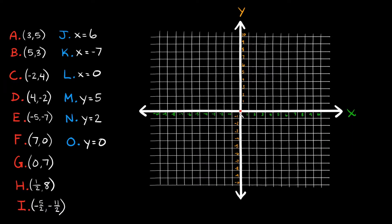These axes have a positive and negative side. Let's talk about the x-axis first. You can see we have positive 1, positive 2, positive 3, positive 4, all the way to basically positive infinity. So from the origin — this is 0 — going that way is the positive x-axis, or the positive x-direction. And then going the other way, the numbers are negative: negative 1, negative 2, negative 3, all the way to negative infinity. So this is the negative x-axis, or the negative x-direction.